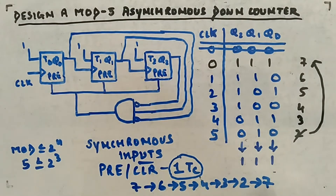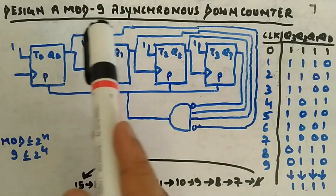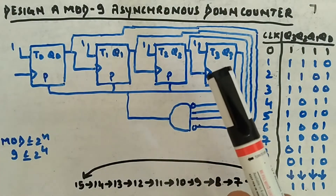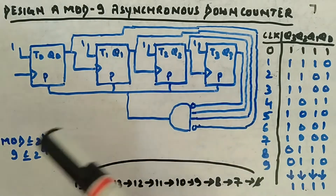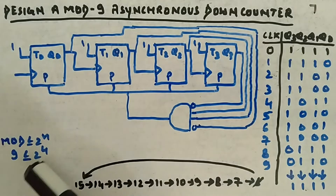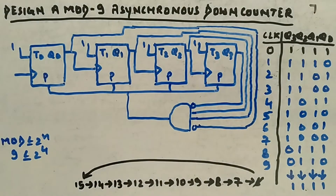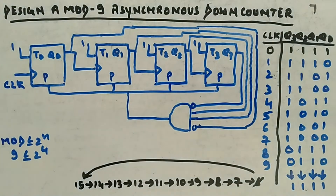Let's take another example: design a mod-9 asynchronous down counter. You can see: asynchronous down counter, positive edge triggered flip-flops, positive connected to positive. Mod value must satisfy 2 to the power n ≥ 9, so four flip-flops are needed. I've made four flip-flops here. The initial state will be 1,1,1,1 at the zeroth clock cycle.